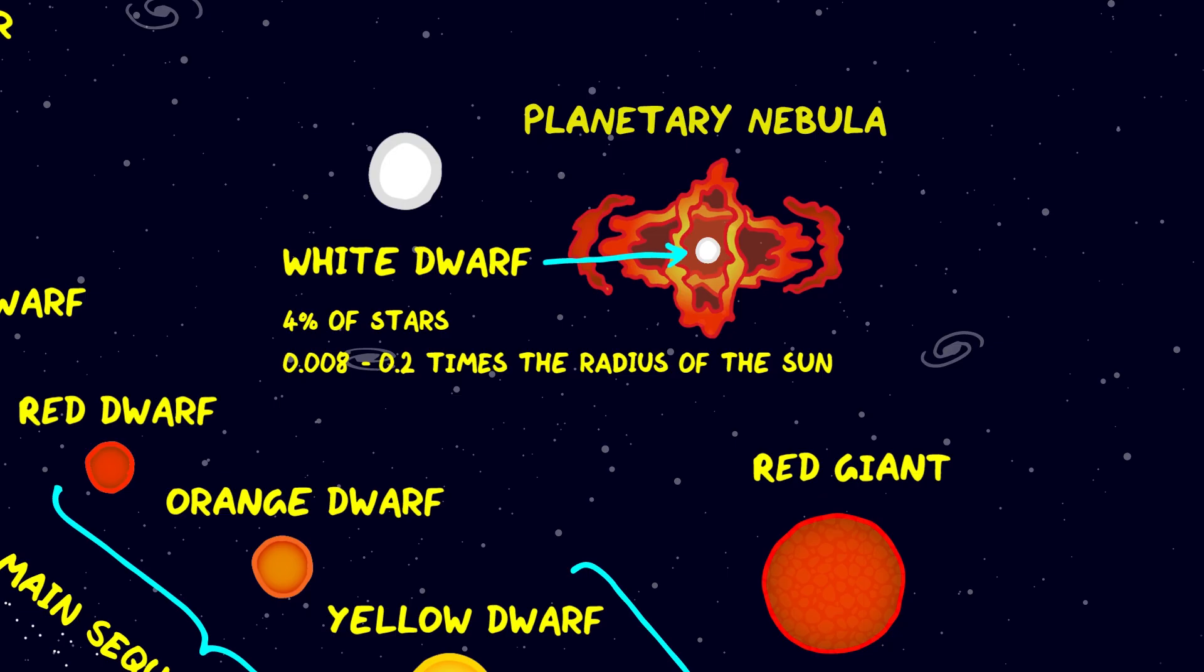And they're dead, no fusion is going on in their cores and they only glow due to their residual heat energy. They will live for trillions and trillions of years, growing dimmer and dimmer until they end up as black dwarves, which don't yet exist because the universe hasn't been alive for long enough. White dwarves will be the final state for more than 97% of the stars in the universe.